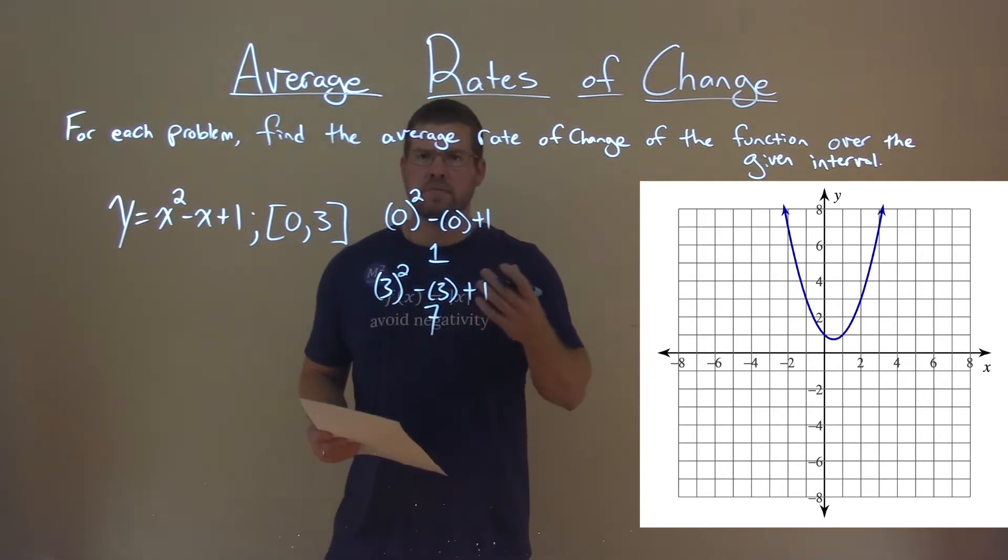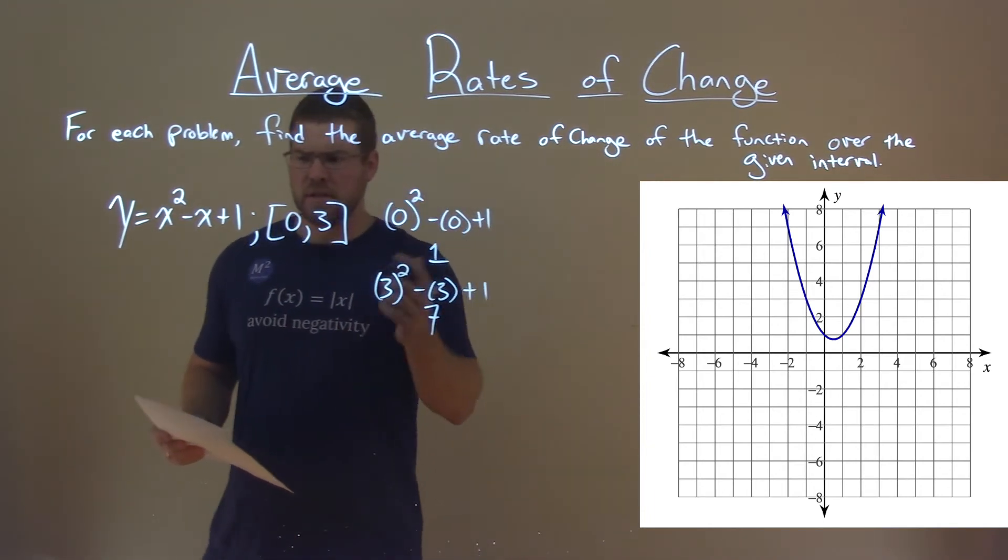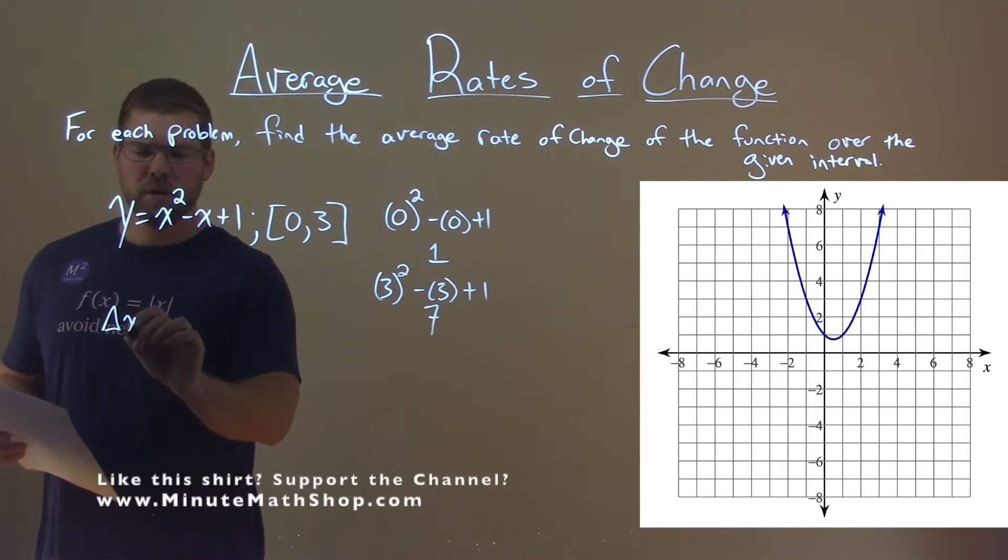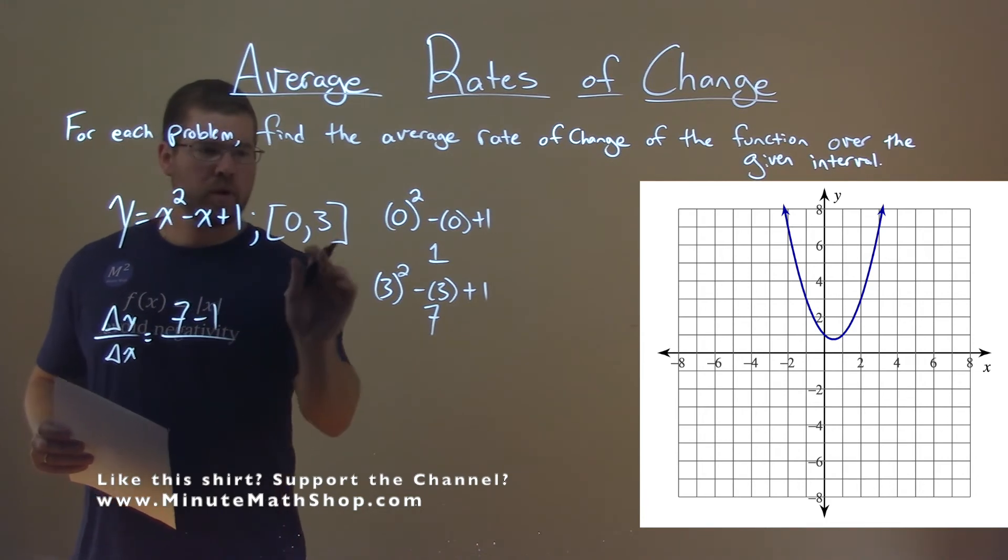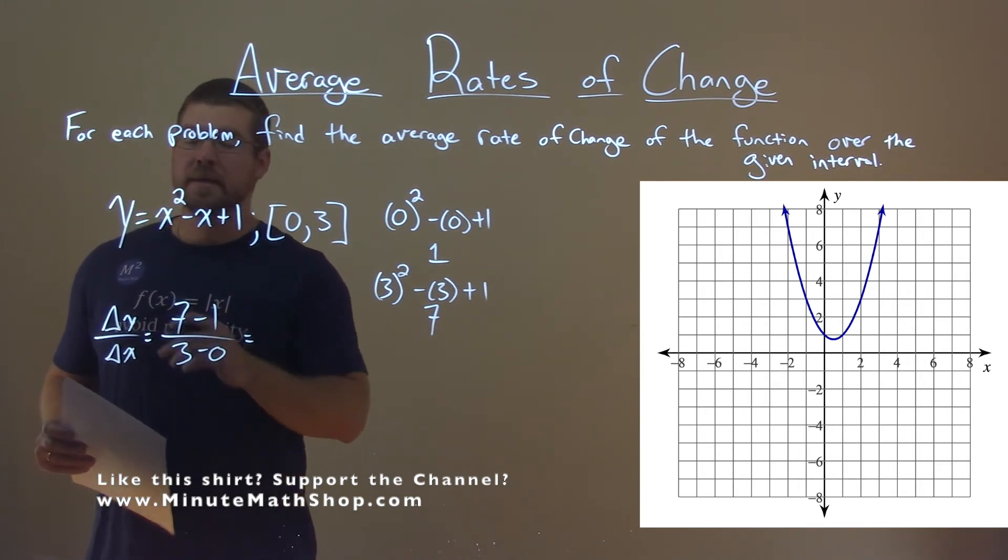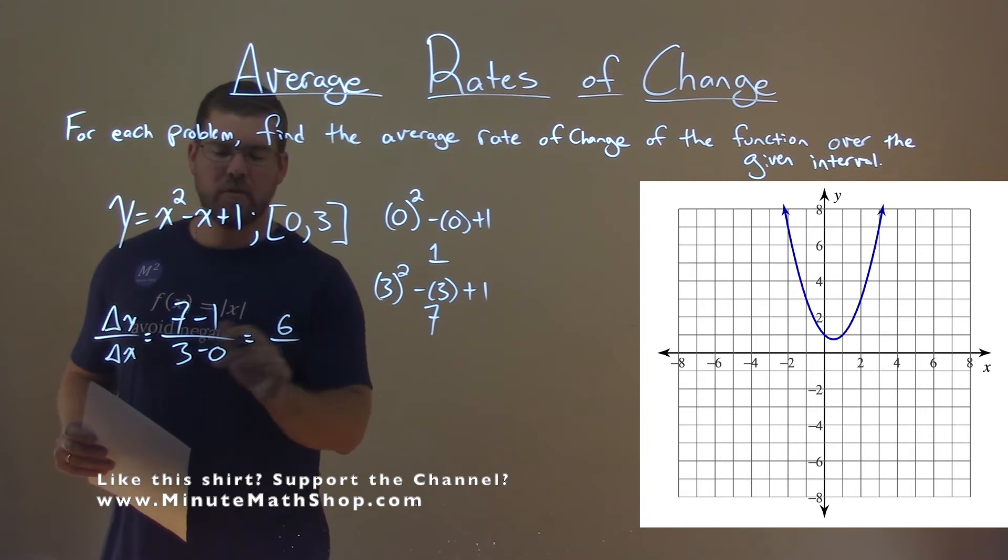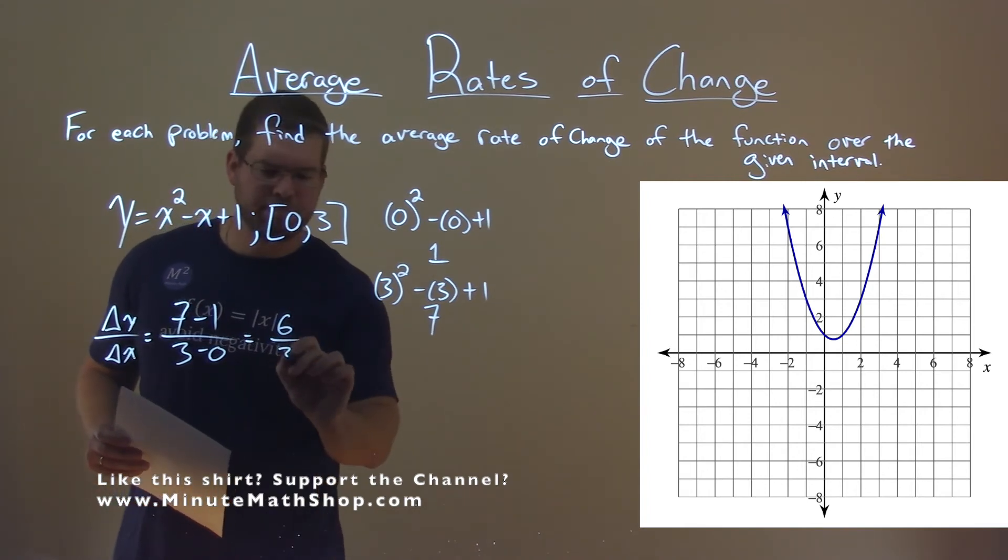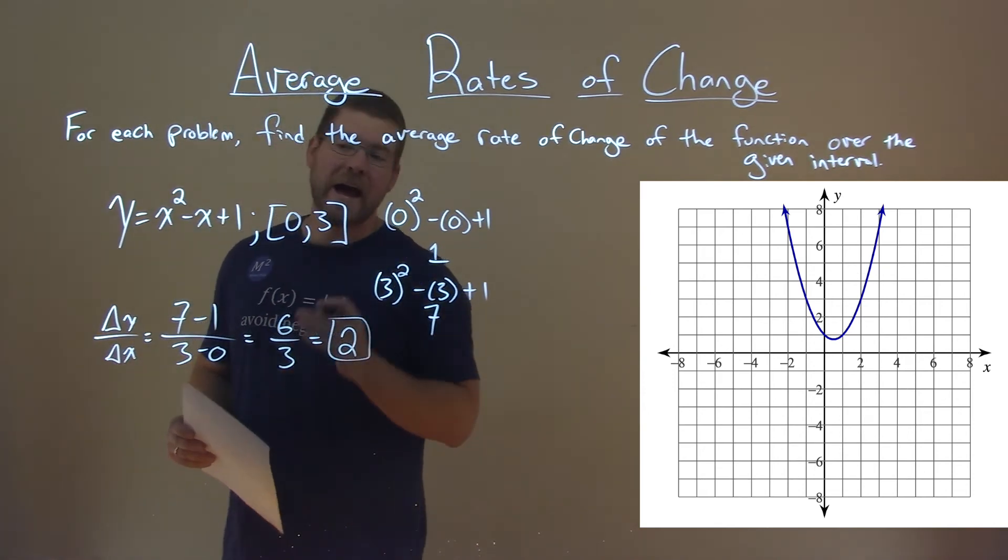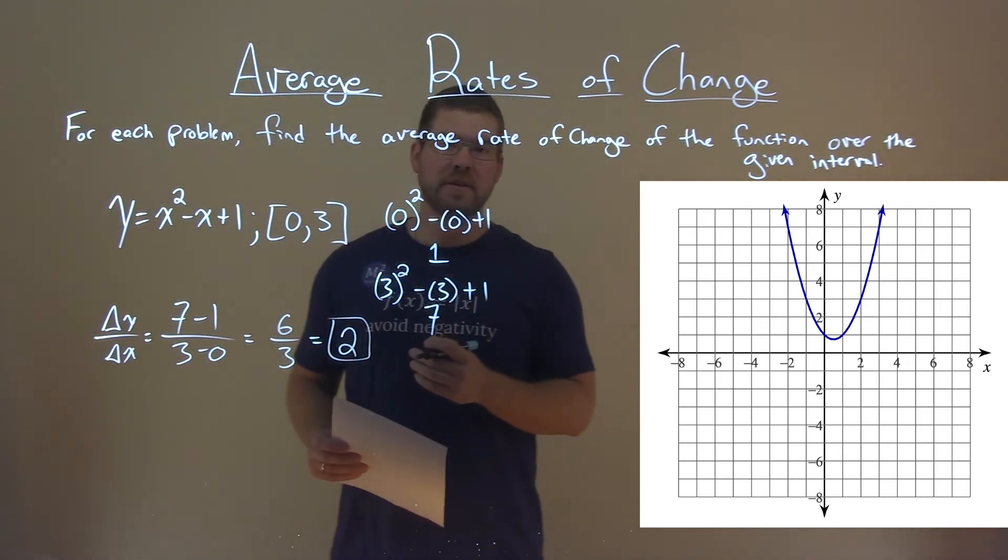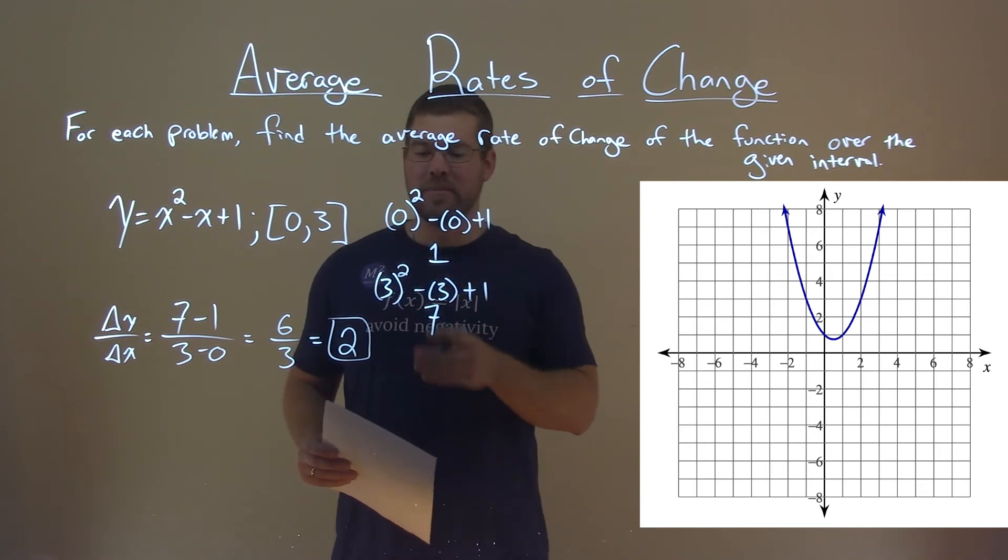Now we have to use our formula for the average rate of change. Our delta y over our delta x, change of y over change of x. 7 minus 1 over 3 minus 0. 7 minus 1 is 6, and 3 minus 0 is 3, and 6 divided by 3 is 2. So our average rate of change for this function over the interval from 0 to 3 is 2.